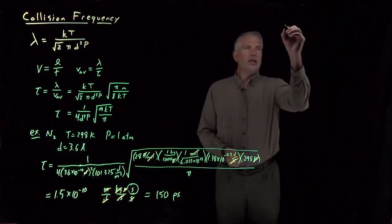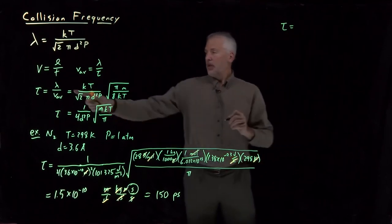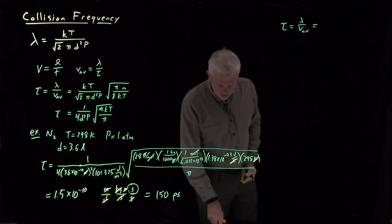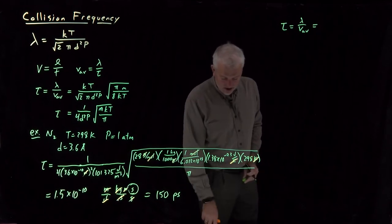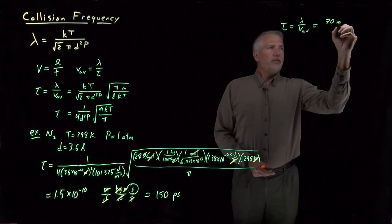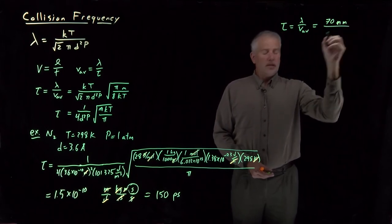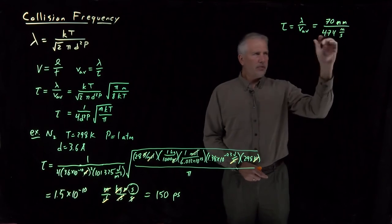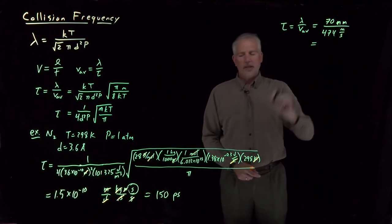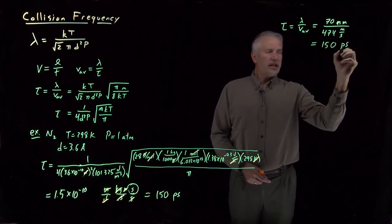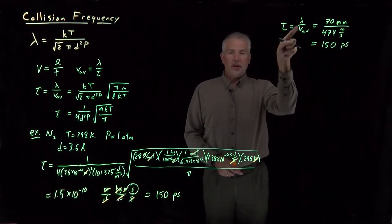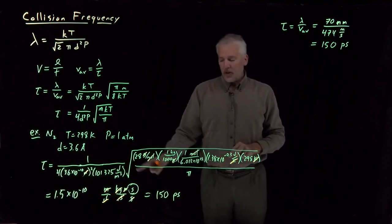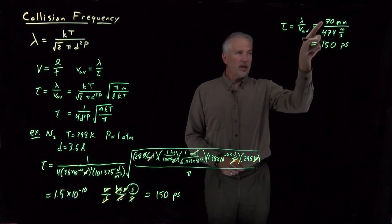The collision time equals mean free path divided by average velocity. Recalling those values under these same conditions: the mean free path was 70 nanometers and the average velocity was 474 meters per second. Dividing those two numbers — after converting units — also gives exactly 150 picoseconds. If you've already calculated the mean free path and average velocity, this arithmetic is significantly easier than using the full expression, since the unit conversions and square roots have already been done.